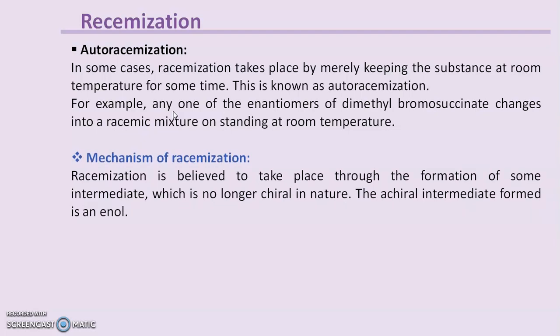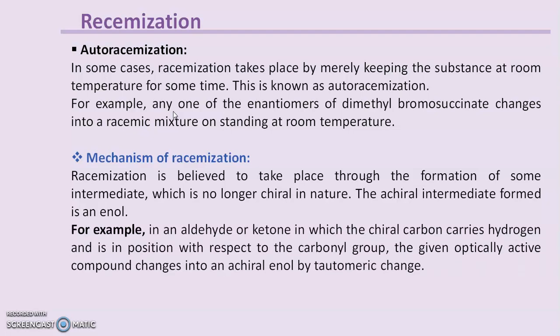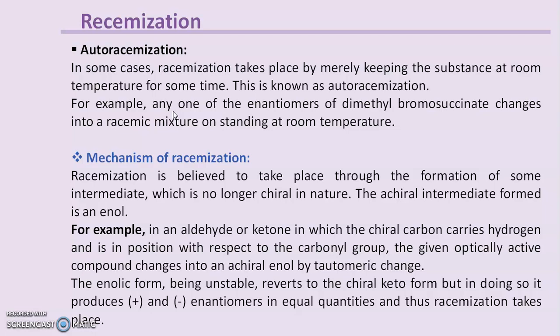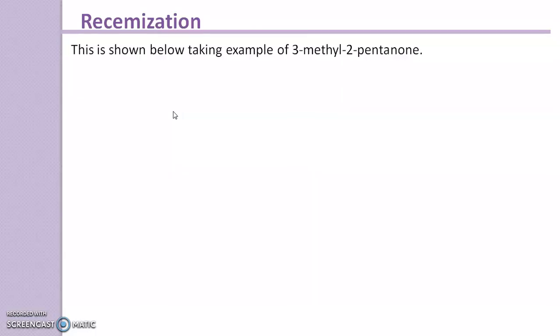Here we discuss the actual mechanism of racemization. Racemization is believed to take place through the formation of some intermediate that is no longer chiral in nature. This achiral intermediate formed is an enol. For example, in an aldehyde or ketone in which the chiral carbon carries hydrogen and is in alpha position with respect to the carbonyl group, the given optically active compound changes into an achiral enol by tautomeric change. The enolic form, being unstable, reverts to the chiral keto form, but in doing so it produces dextro and levo enantiomers in equal quantities, and thus racemization takes place.